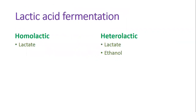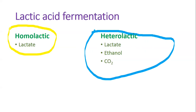Recall that in homolactic fermentation, one molecule of glucose is ultimately converted to two molecules of lactic acid. Heterolactic fermentation, in contrast, yields carbon dioxide and ethanol in addition to lactic acid. The pathway is also present in some species of microalgae, cyanobacteria, and fungi.